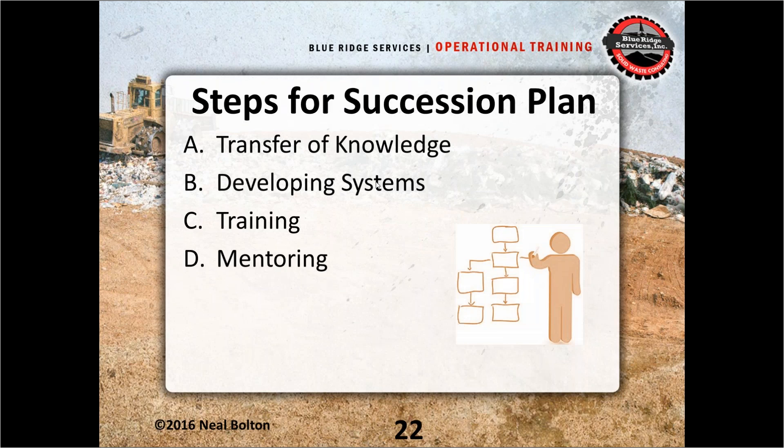There are four steps to think about if you're planning a succession plan. First, a transfer of knowledge — getting information to the next manager. Second, developing systems to make the transition easier. Third, training. And fourth, mentoring. Transfer of knowledge is basically extracting the information the current manager knows and getting it into someone else before this person leaves.